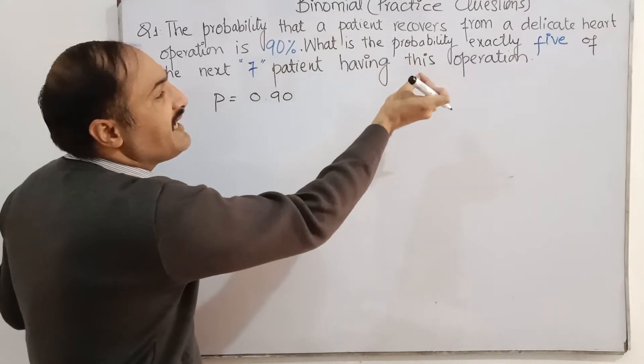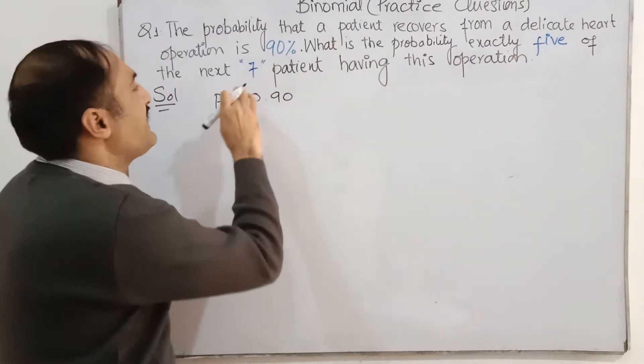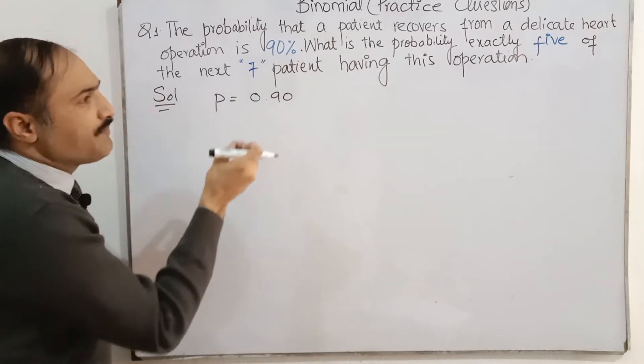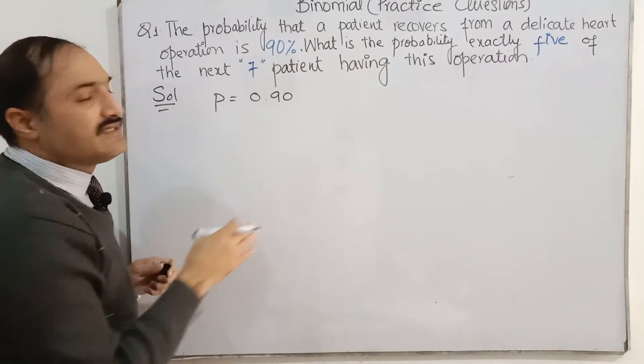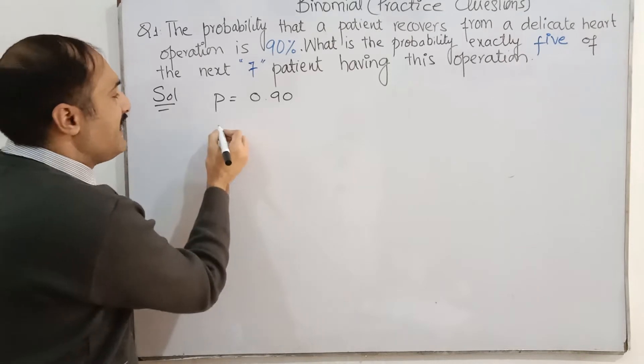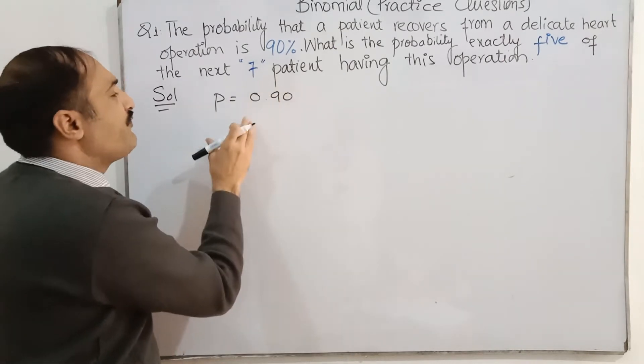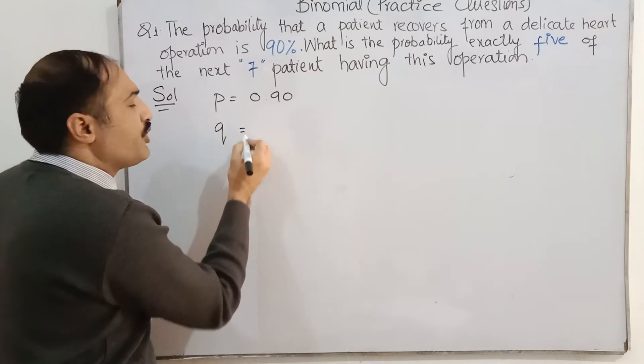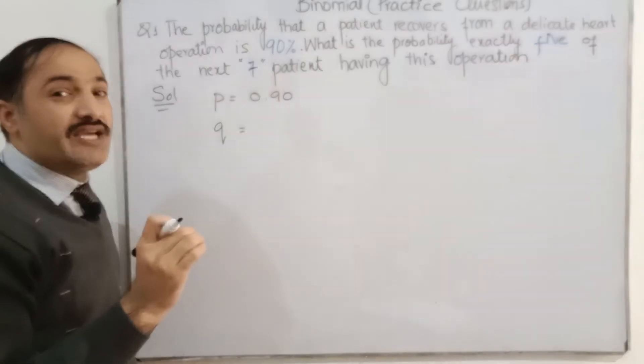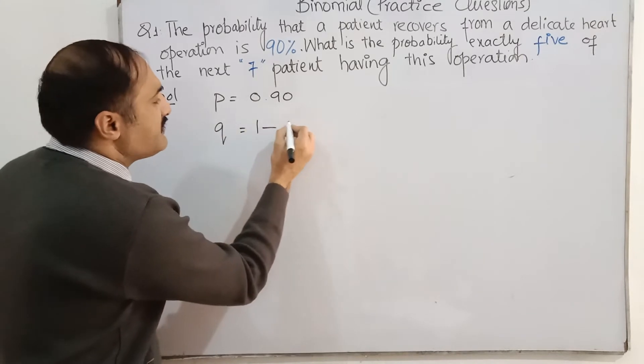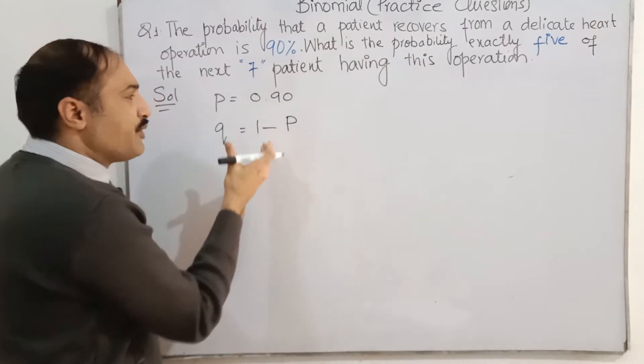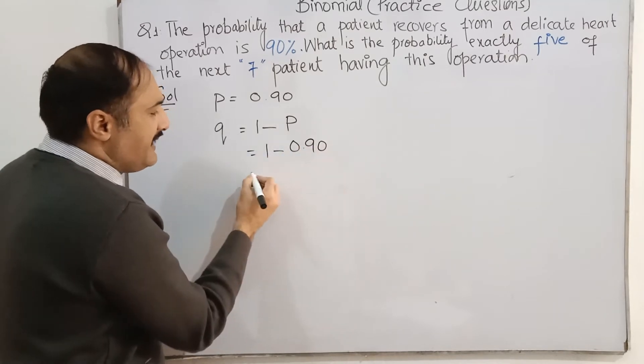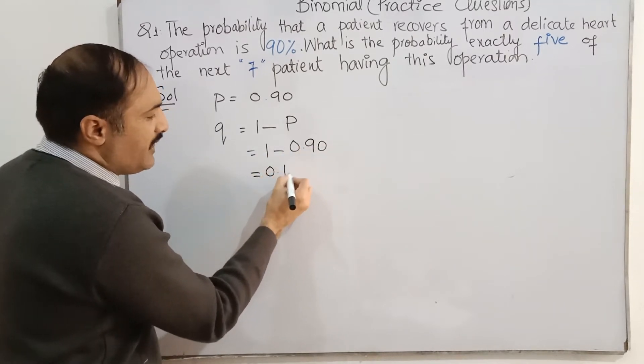What is the probability that exactly 5 of the next 7 patients having this operation? So here is number of successes, x. First we will find the probability of success and how we can find probability of failure. Probability of failure is equal to 1 minus P. 1 minus 0.90 is 0.10.